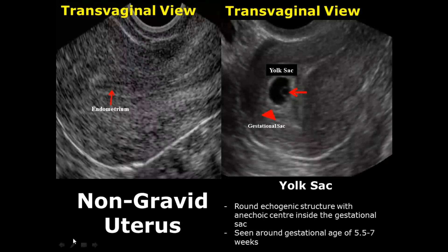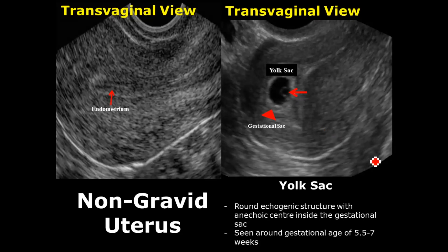The yolk sac is the first structure visualized in the gestational sac. It is an echogenic structure with an anechoic center and is usually seen around the gestational age of 5.5 to 7 weeks.